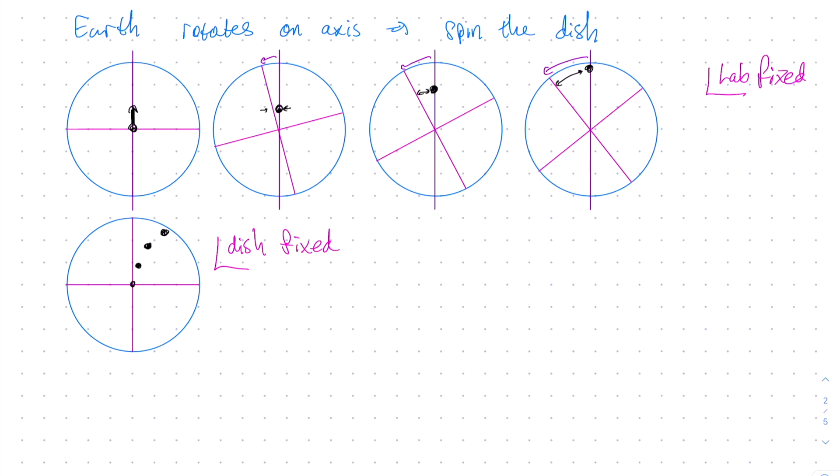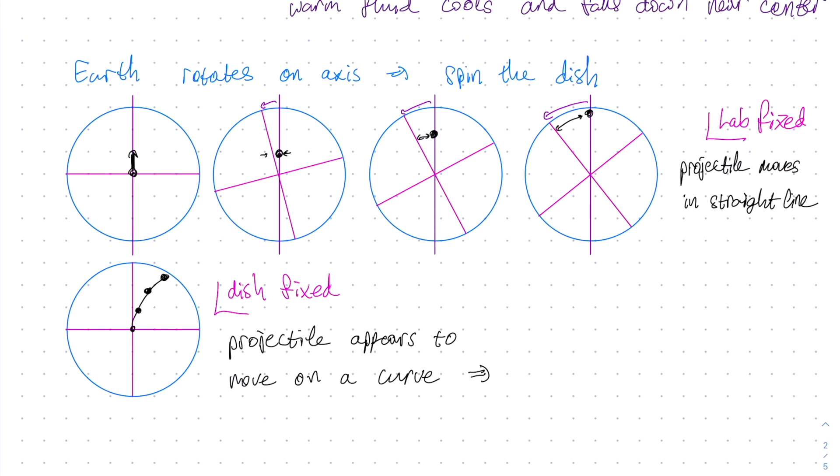Drawing smooth lines through the points in the dish fixed coordinates, we see that the smooth line appears as a curve. To summarize, in the lab fixed coordinates, the ball bearing moves on a straight line. However, in the dish fixed coordinates, the ball bearing appears to be moving on a curved line. It is as if there is a force acting on the ball bearing. This is called the Coriolis force.